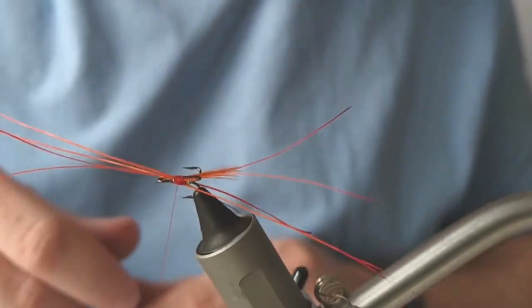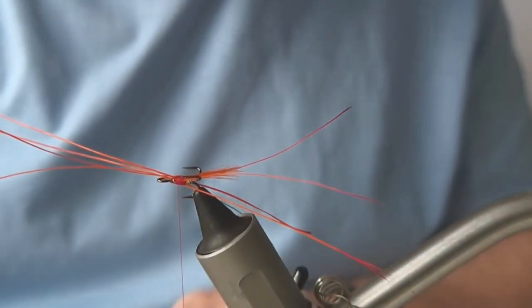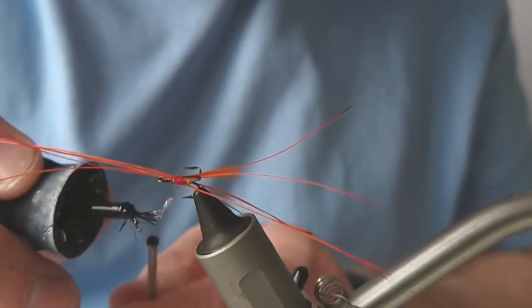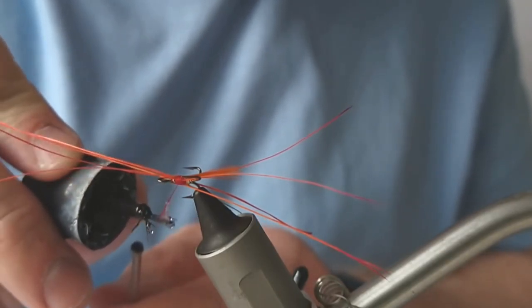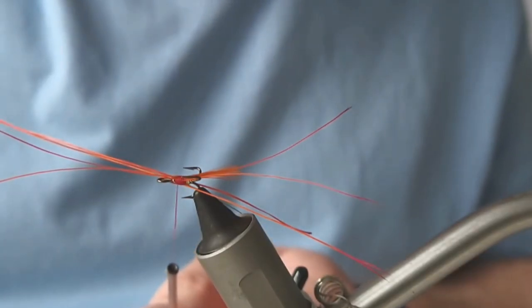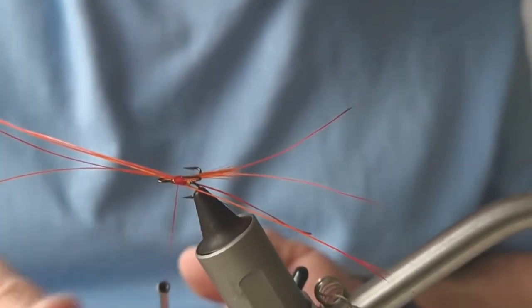As you can see, the thread is under a lot of pressure from those points of the treble. So what I'm going to do is add a bit of super glue, which will both secure the boar bristles but it'll also secure the thread underneath, a bit of security.